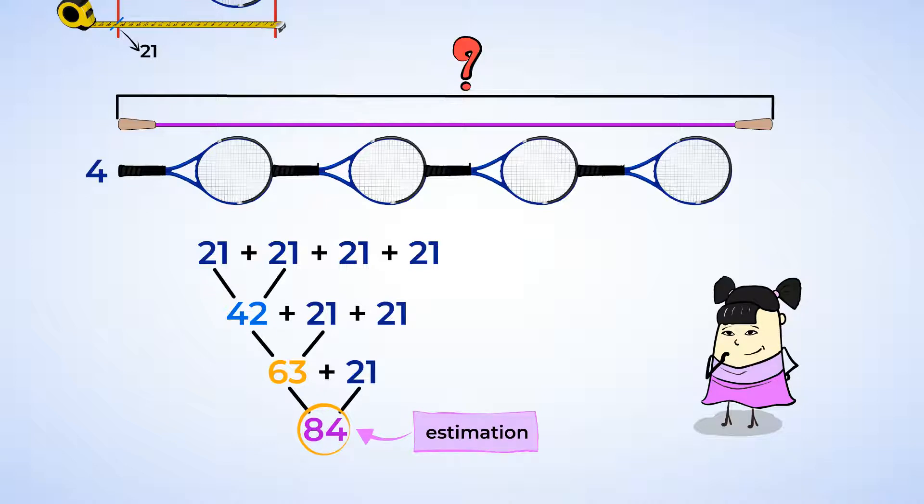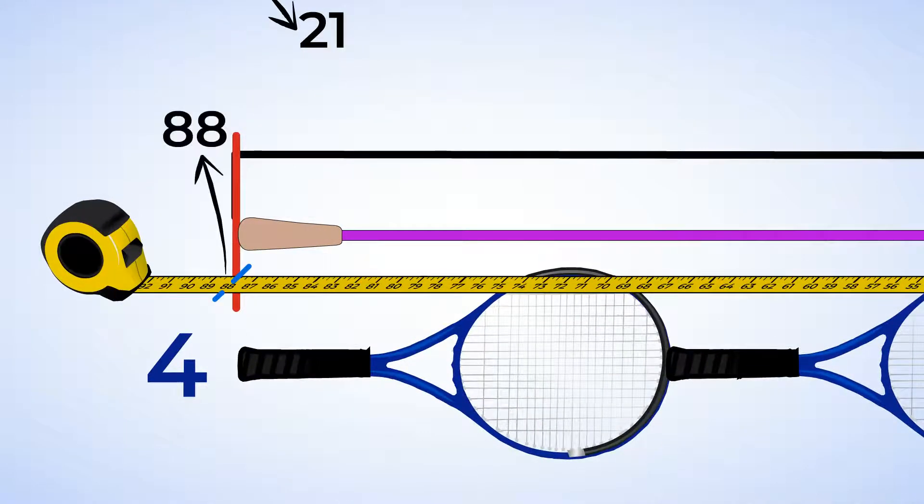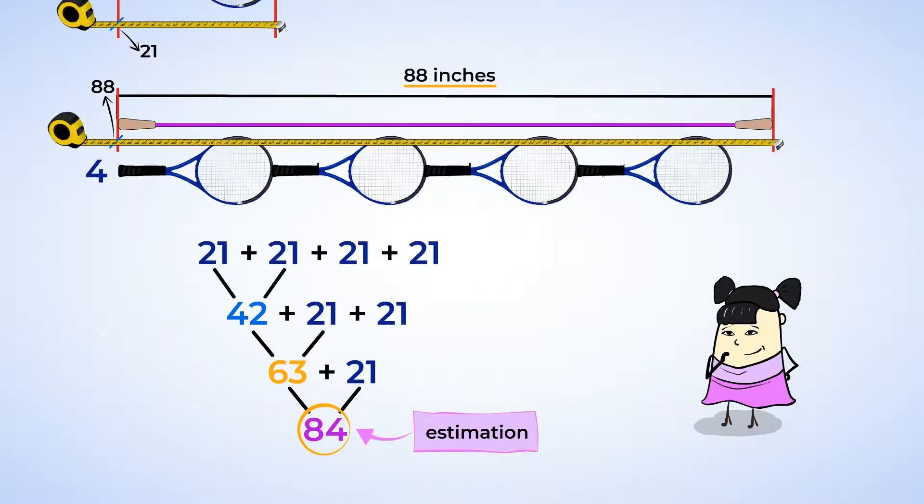Sue is about to measure the jump rope. Let's see what the actual length is. The measuring tape is aligned, and look. The jump rope is 88 inches. That's really close to our estimation of 84 inches. Great job!